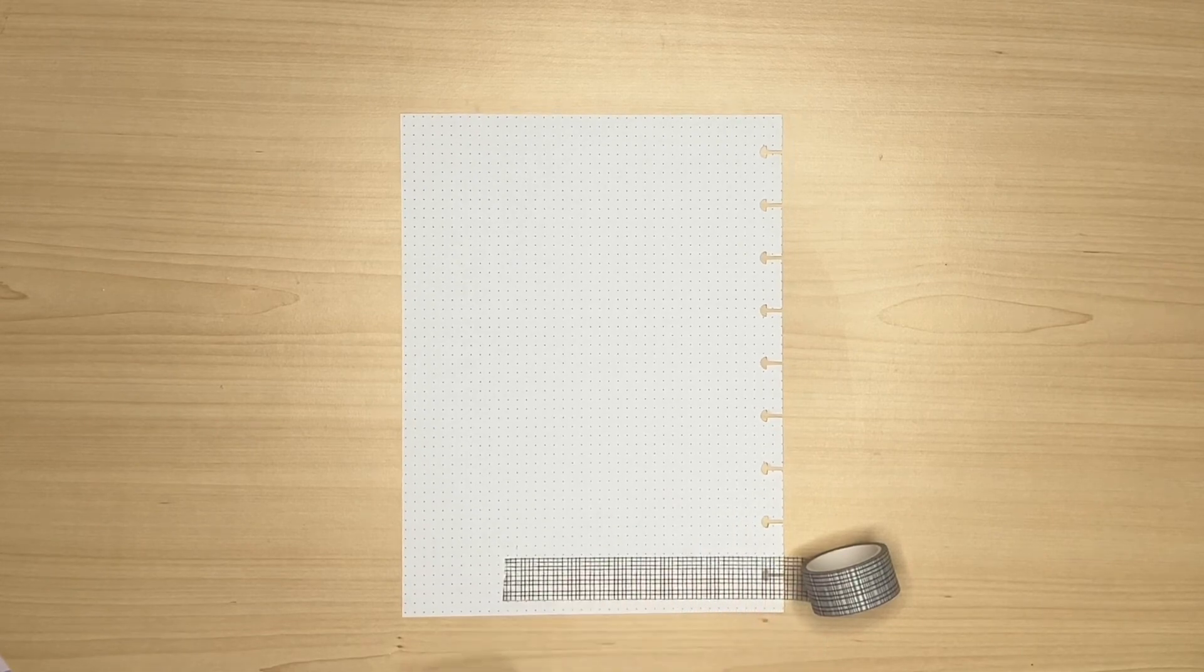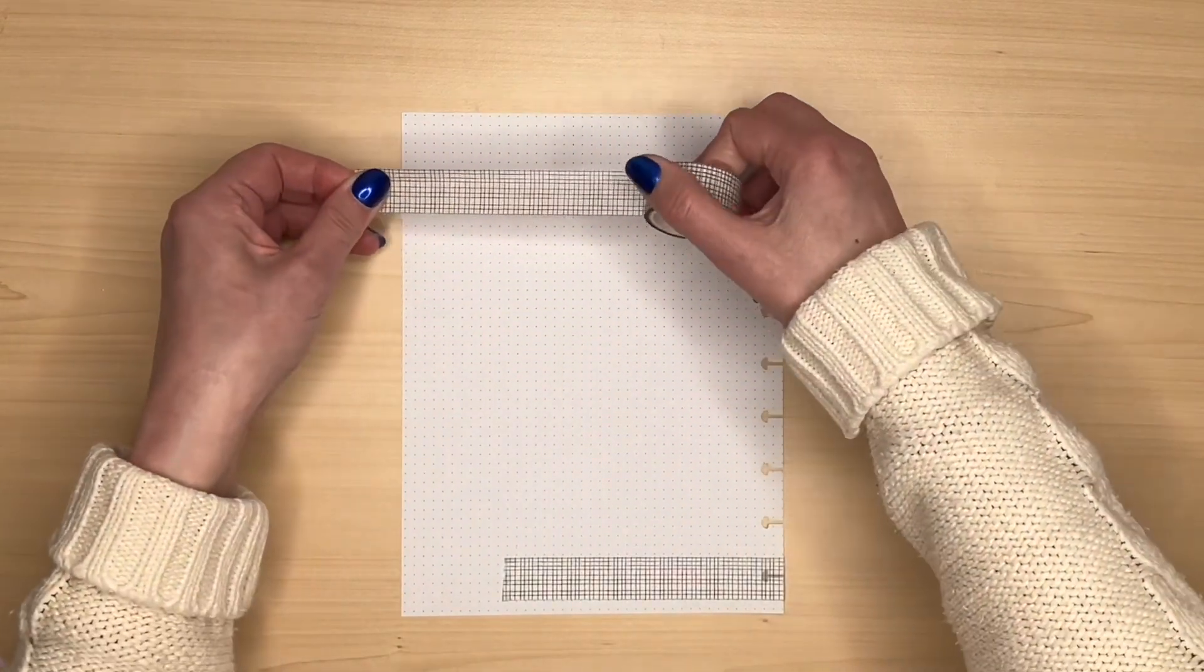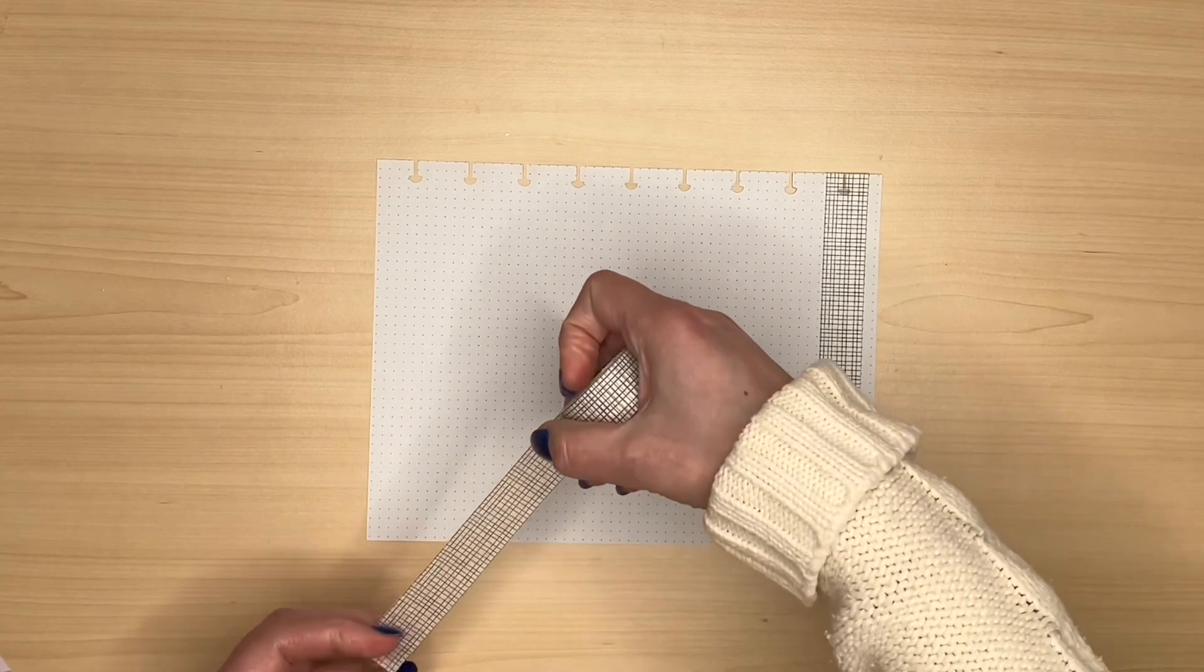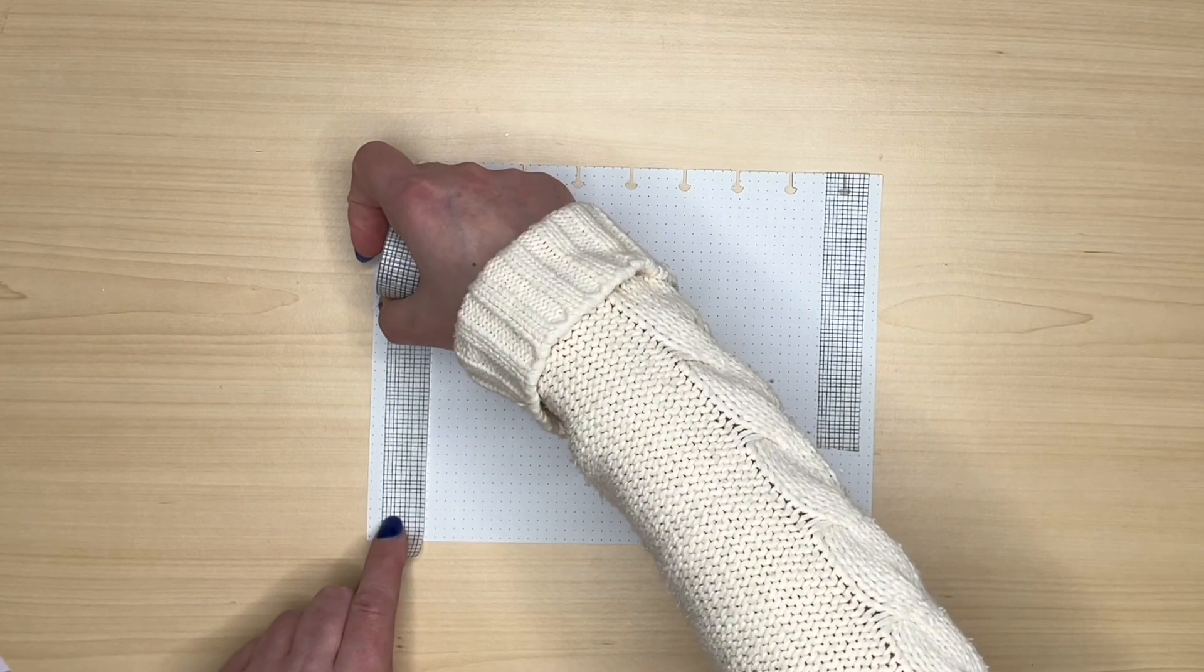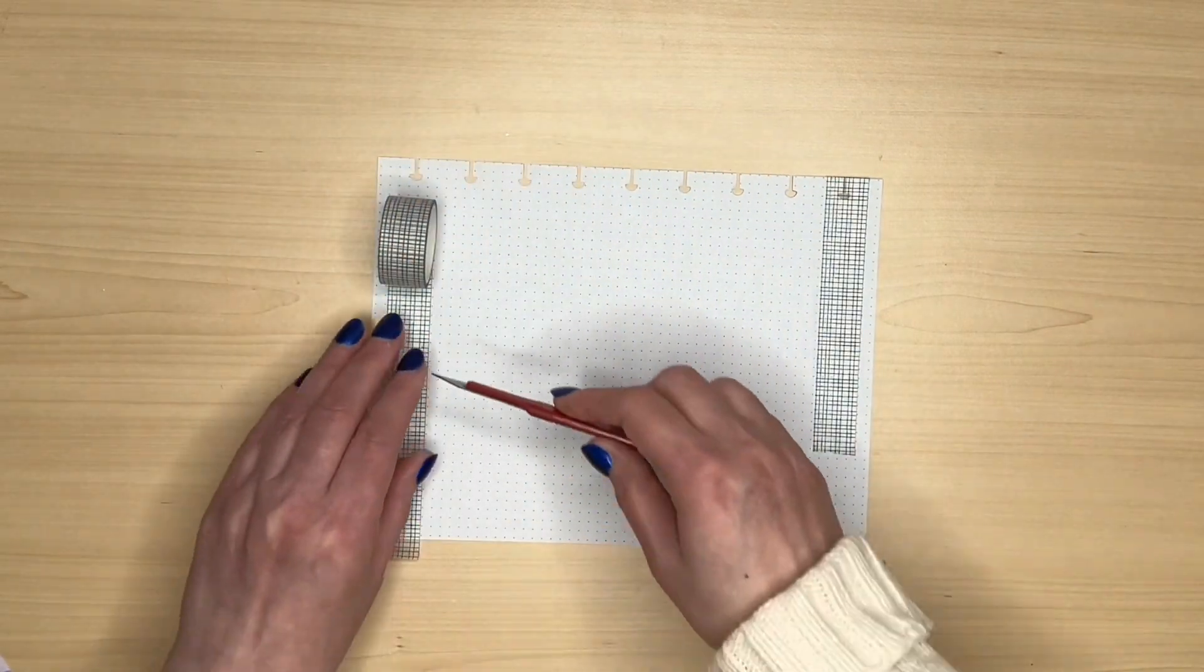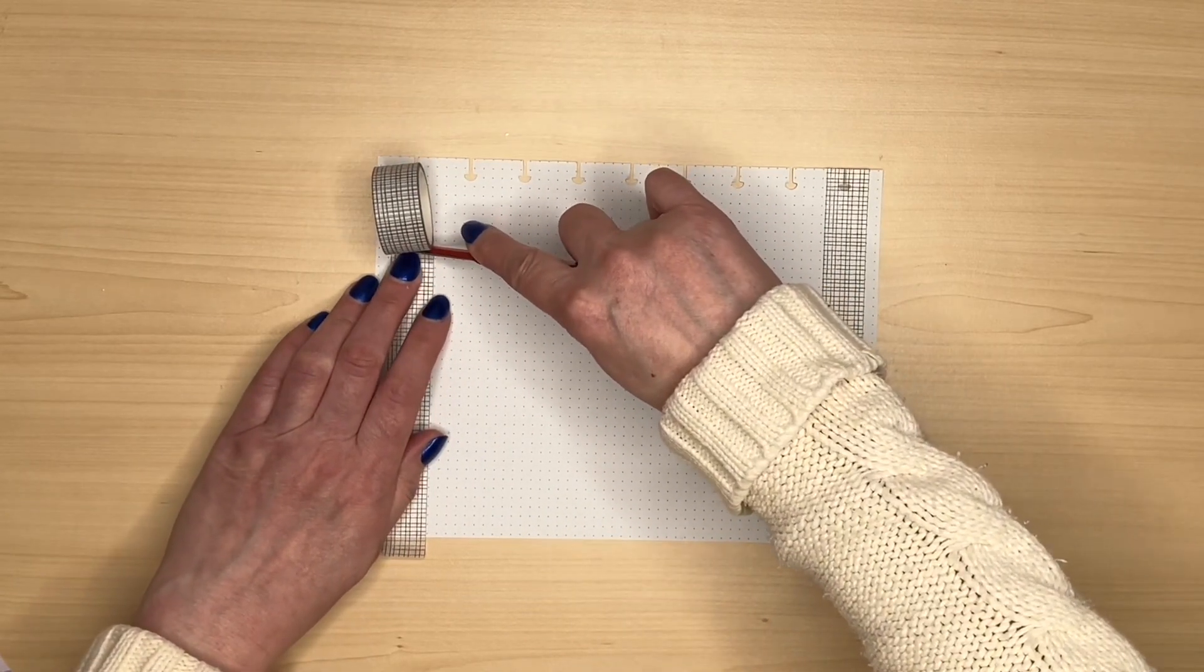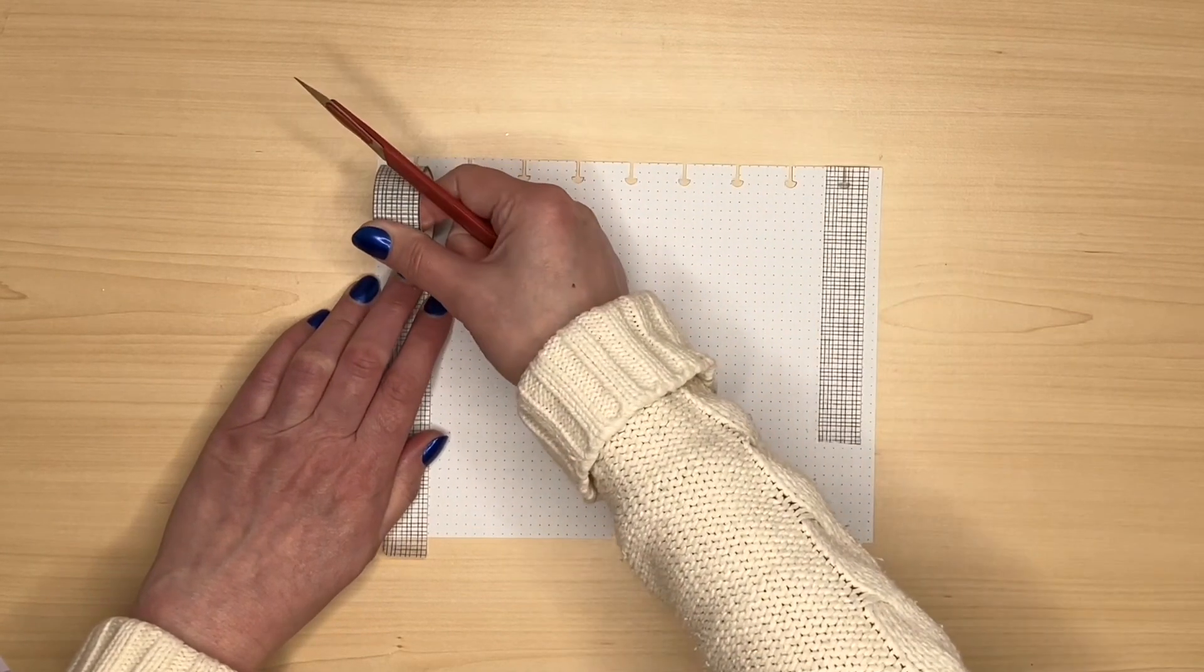I'm using this grid washi from Amazon and I thought I would just put some at the top and the bottom of the page and probably put the word April on top of it. I've got some alphabet stickers that I found that match the colours of Caitlin stickers. I did think about using the script washi but I haven't actually used this washi before so I'm trying to use everything I have so I thought I would go with this one today.